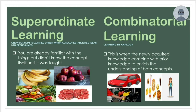Combinatorial learning is when newly acquired knowledge is combined with prior knowledge to enrich the understanding of both concepts. For example, we all know that a car moves — but why? Because of gasoline. Similarly, the human body can move because of the food we take. We can think of combinatorial learning as learning by analogy. An analogy is a comparison between two things typically for the purpose of explanation or clarification — or in Tagalog, pinapalawak ang ating kaalaman, meaning expanding our knowledge or understanding.